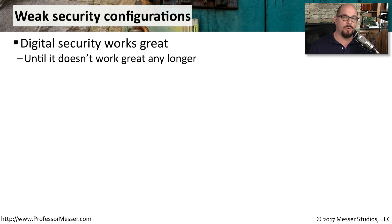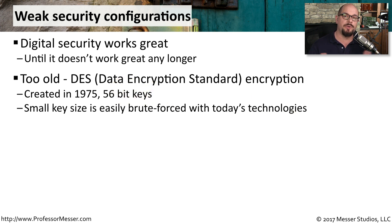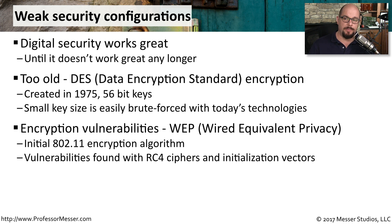The security technologies we're using today work extremely well, but we may find that in 10 or 20 years we may not want to be using those same technologies to protect our networks. A good example of this is the Data Encryption Standard, or DES — created in 1975 using 56-bit keys. The keys were so small and the encryption mechanism was relatively simple compared to what we use today that we could easily brute-force a DES key using today's technologies. Similarly, the encryption we initially used on wireless networks was Wired Equivalent Privacy, or WEP. We found that this 802.11 security technology had a cryptographic flaw, so everyone migrated away from WEP and changed their wireless encryption to WPA2.